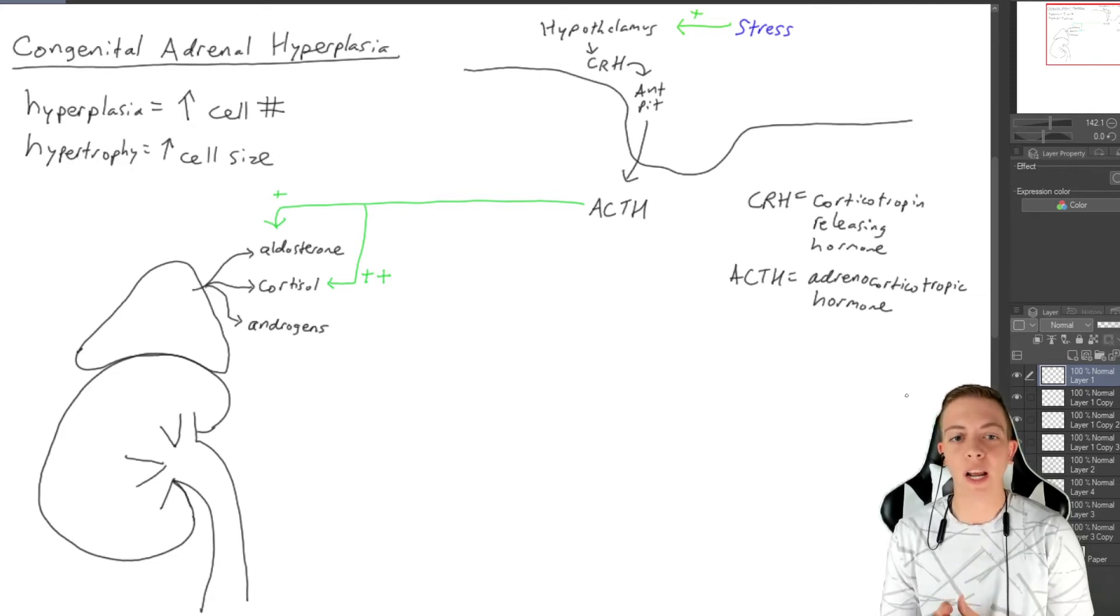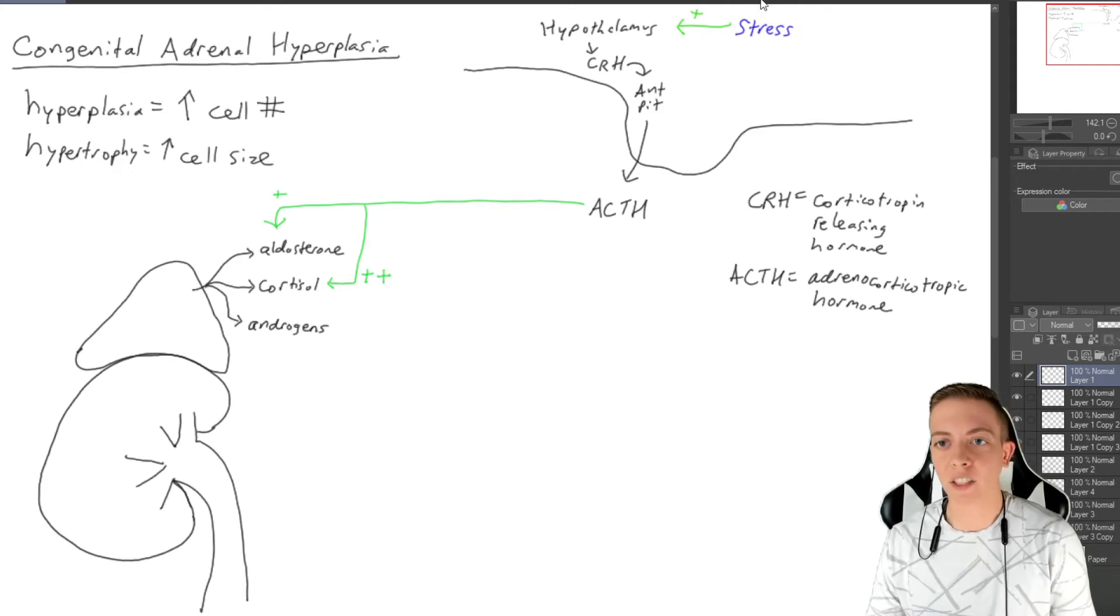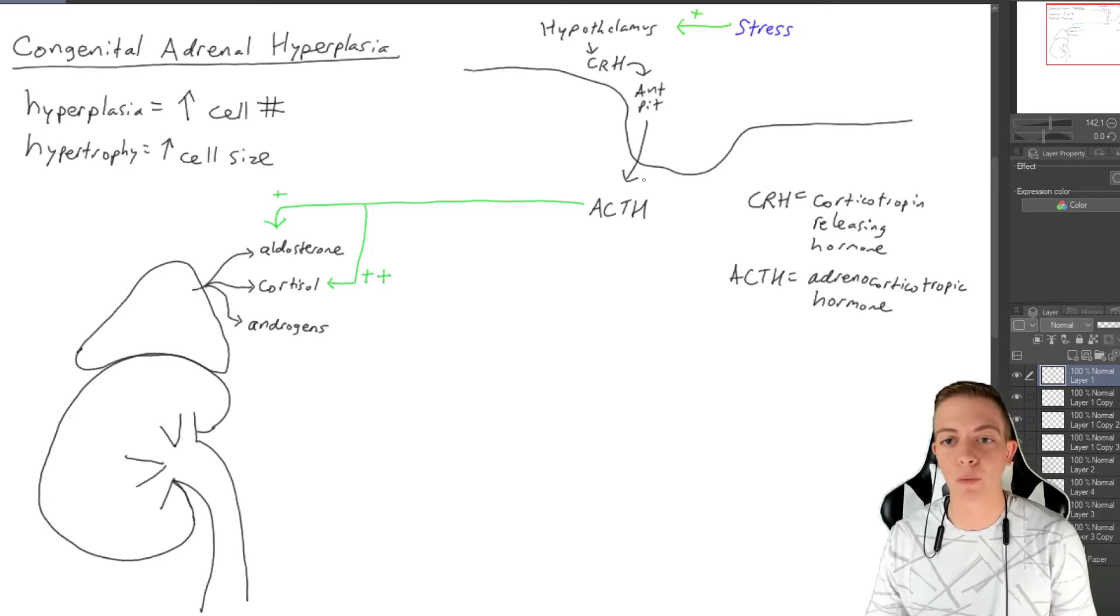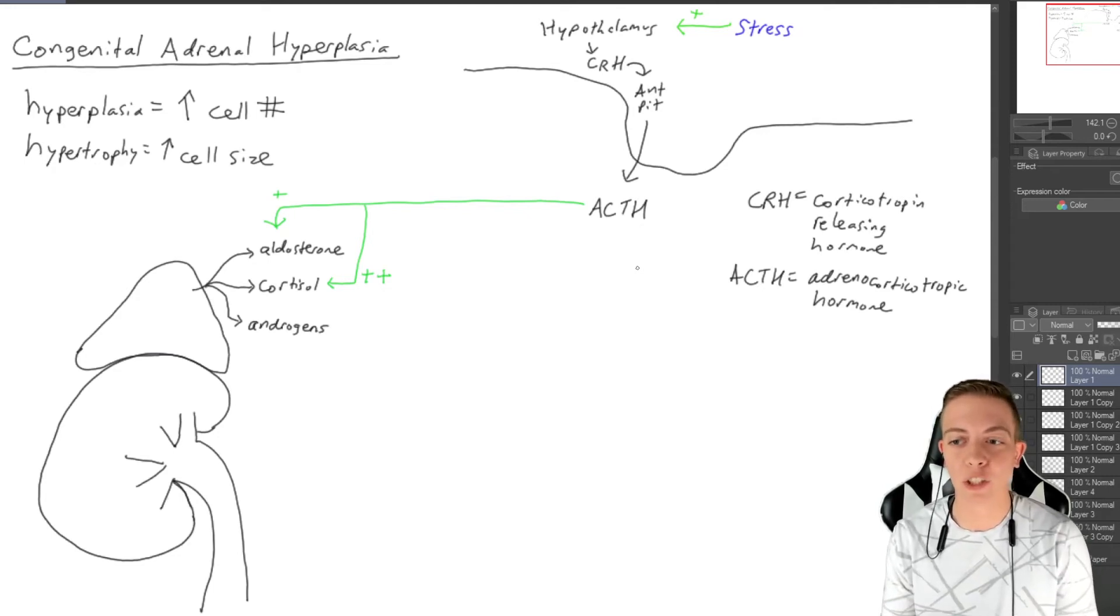Let's say we're in a time of stress and we need a lot more cortisol to be able to raise our blood sugar levels. Stress is going to cause the hypothalamus to produce a hormone called CRH, which is corticotropin releasing hormone, which will then float down to the anterior pituitary and stimulate release of another hormone called ACTH, or adrenocorticotropic hormone.